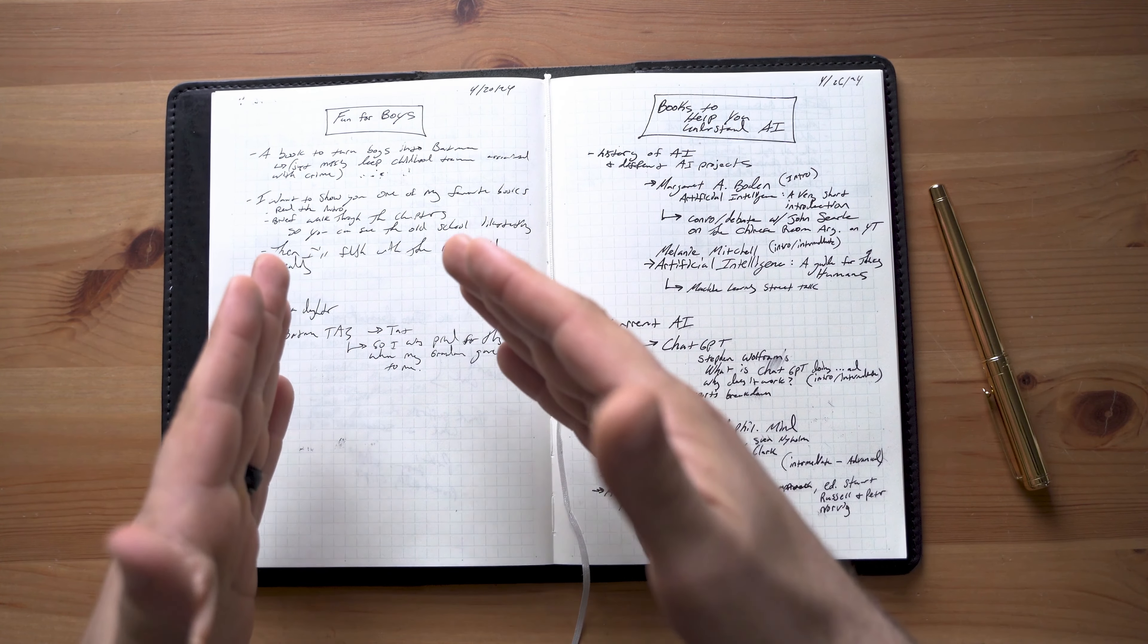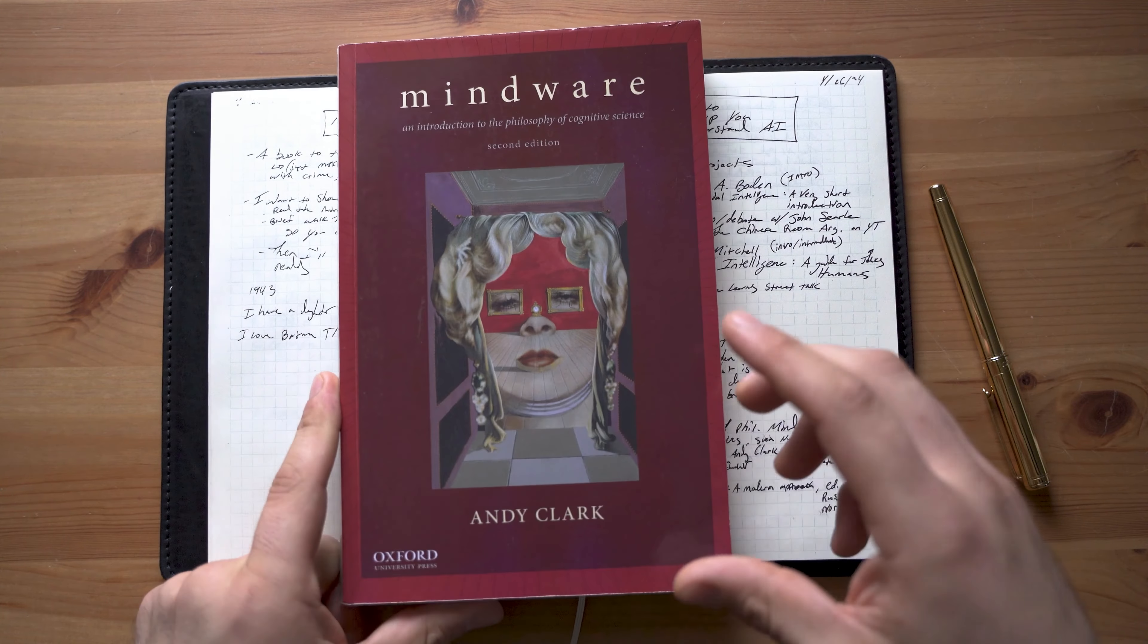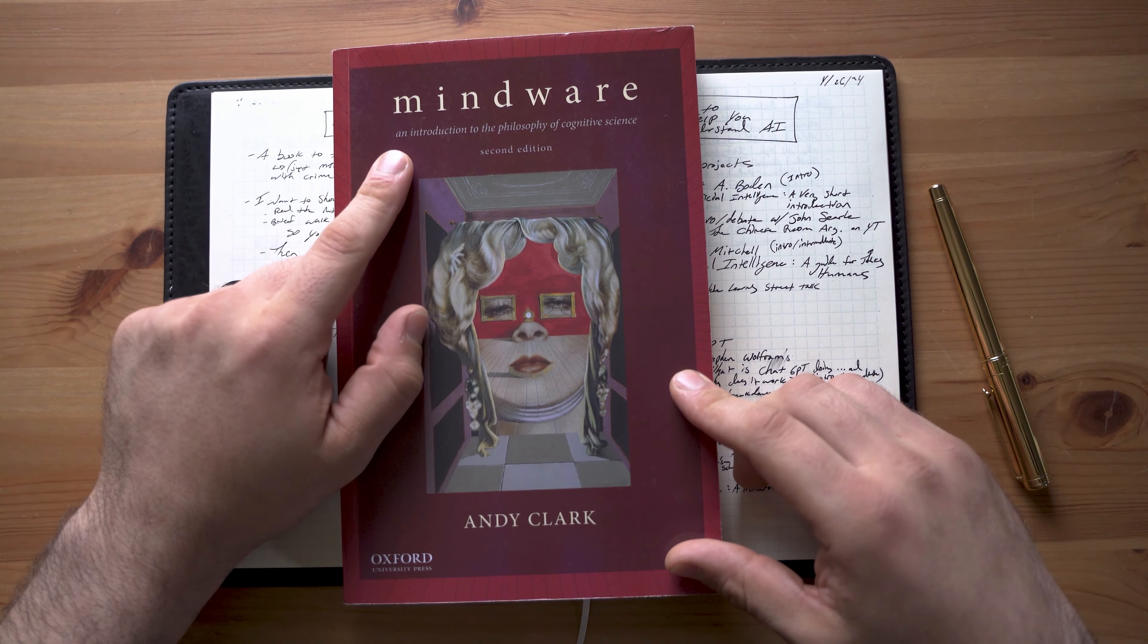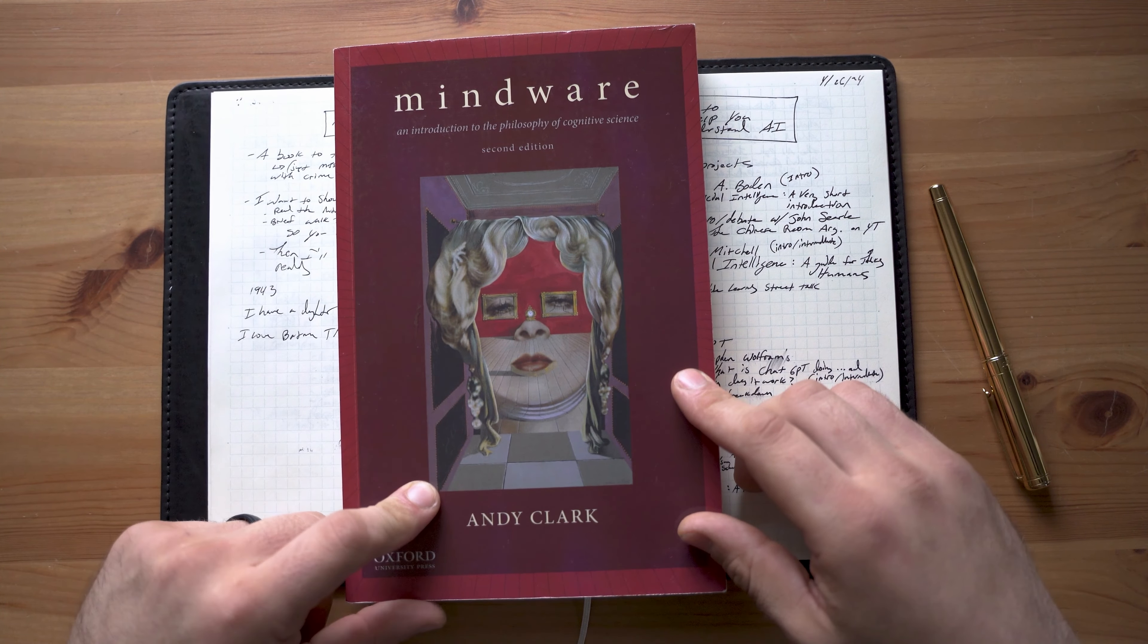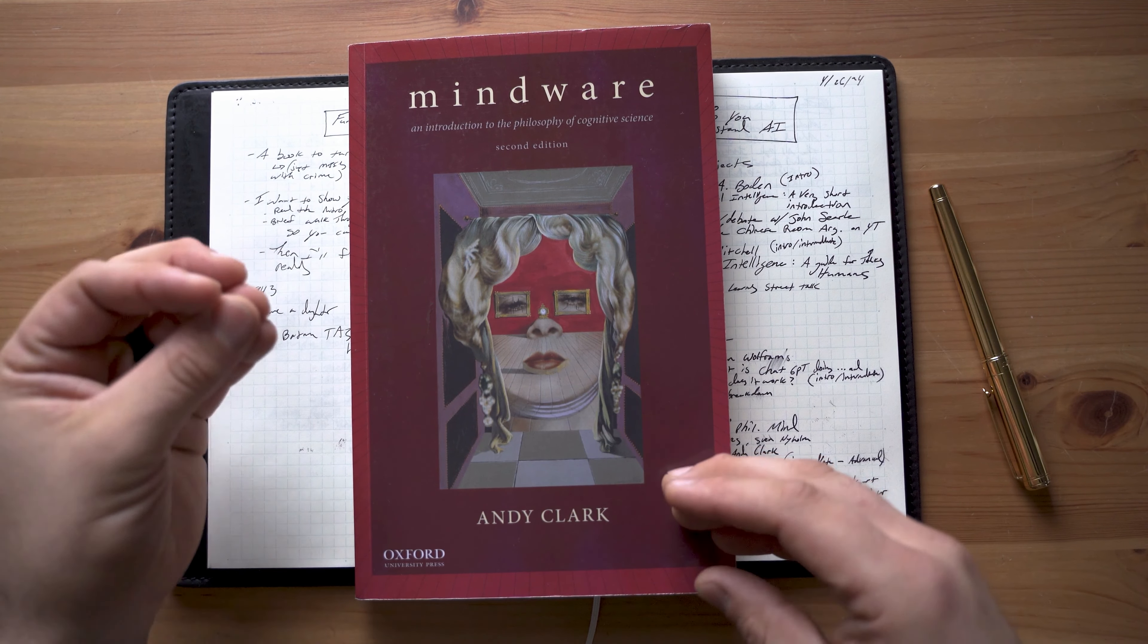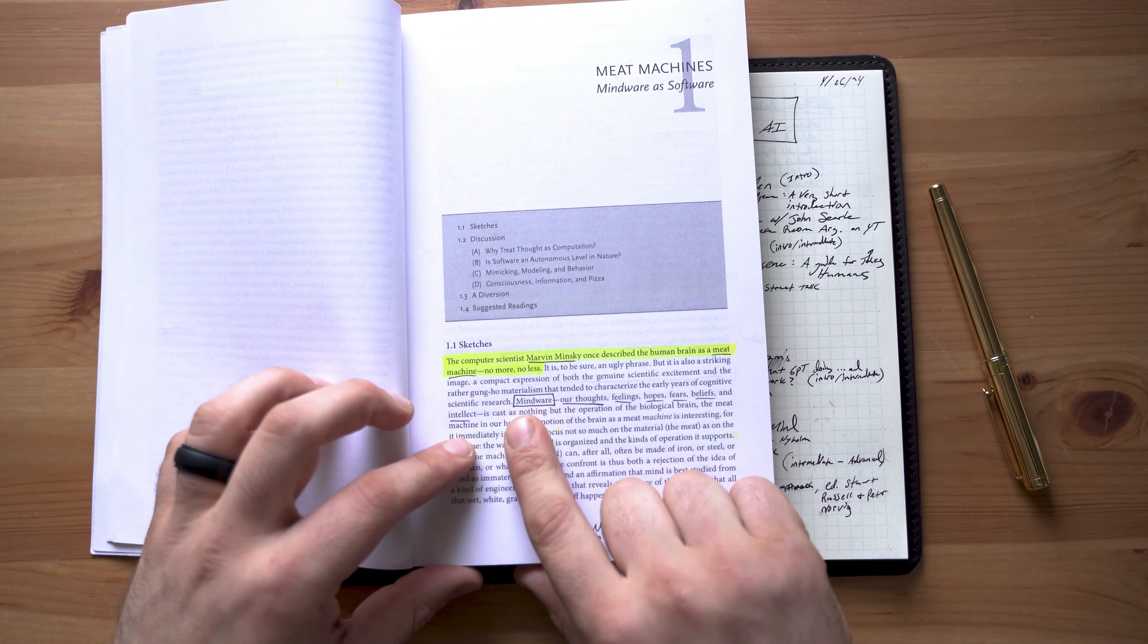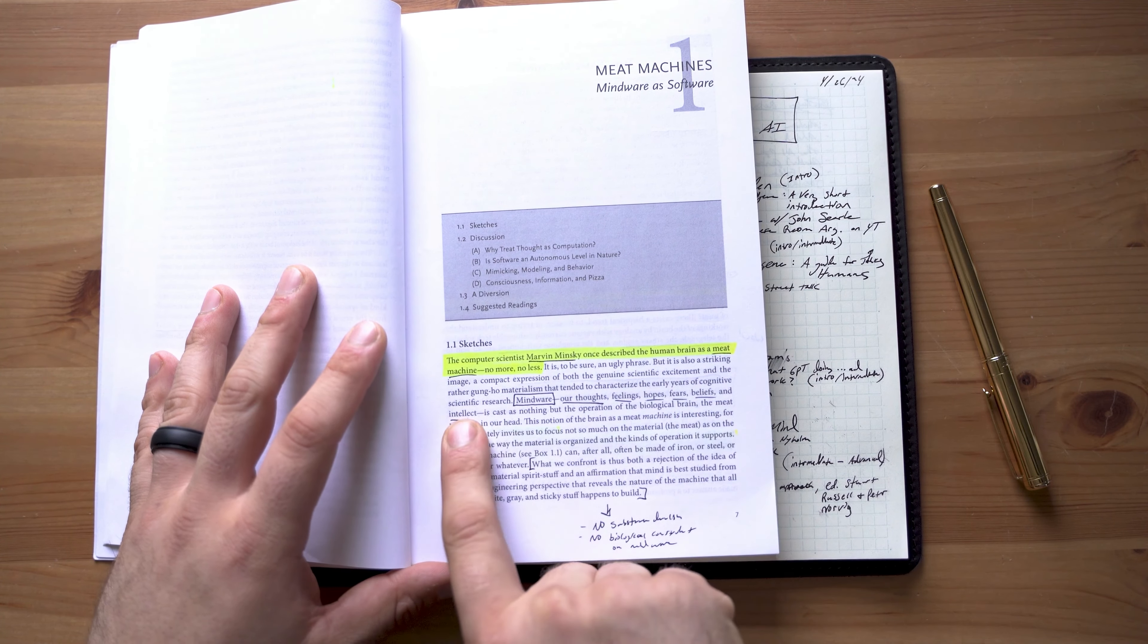Now those five books are introduction and intermediate books, but if you want to go even further into the philosophy side of things, I recommend Mindware. It's an introduction to the philosophy of cognitive science. This is the second edition and it's by Andy Clark. Andy Clark is a fantastic thinker. I love the way this guy thinks, but this is right at the intersection of philosophy of mind and artificial intelligence and computer science type stuff. Andy Clark calls mindware things like our thoughts, feelings, hopes, fears, beliefs, and intellect.